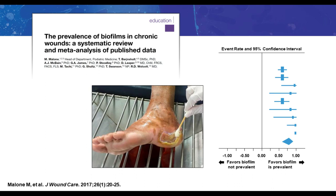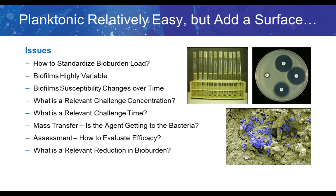When evaluating new technologies in terms of their therapeutic activity against biofilms, we have to consider many different challenges. Unlike planktonic cells, which are relatively easy to analyze because they're readily diluted, homogenous, and we can very precisely control their growth rates and bioburdens, bacteria in biofilms are highly contextual. Depending on where they are in the body and the materials they're on, they can be highly variable. Issues include how to standardize the bioburden, how to handle the heterogeneity, and the fact that as biofilms grow and mature, susceptibility changes over time.